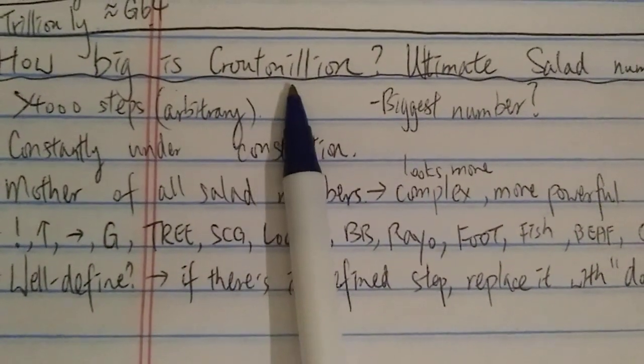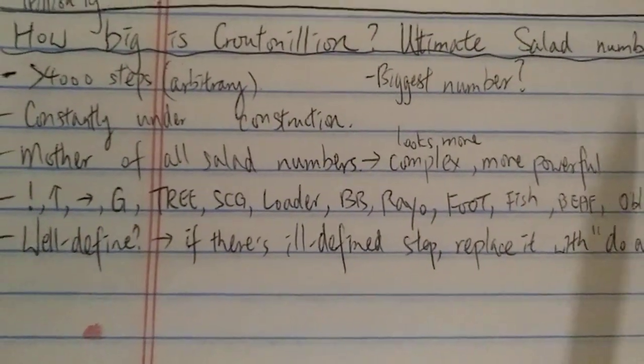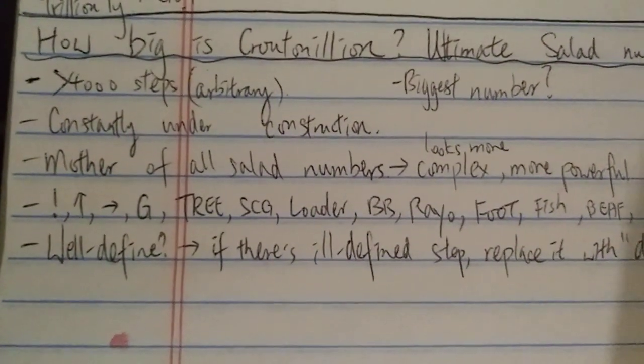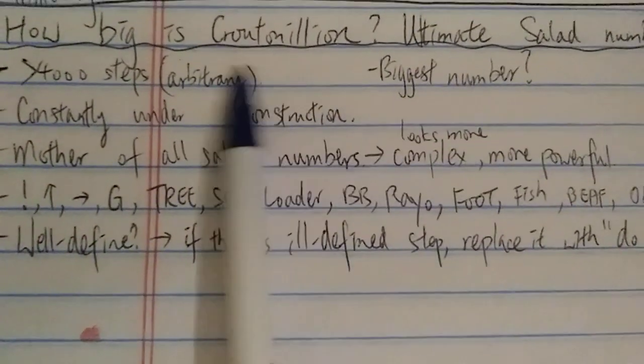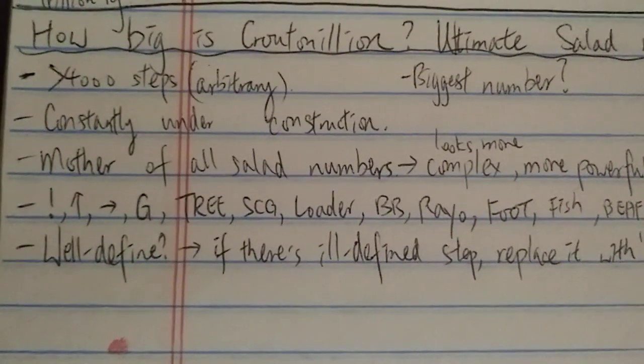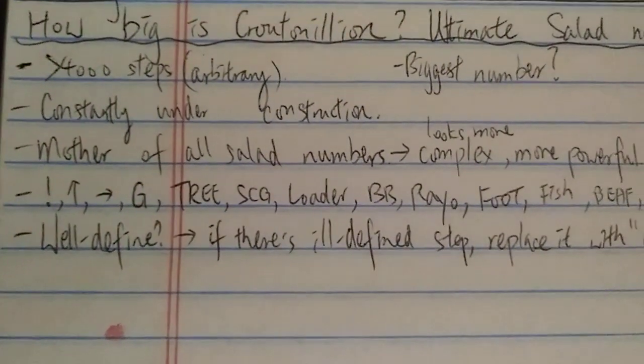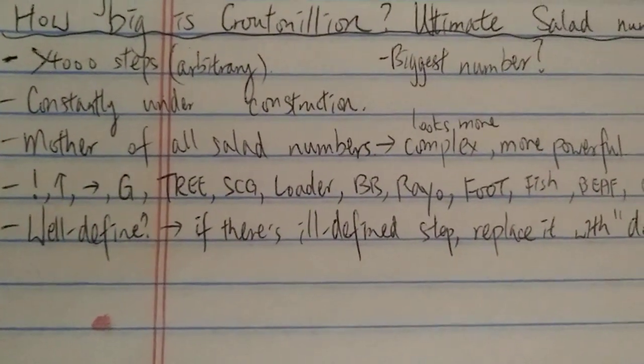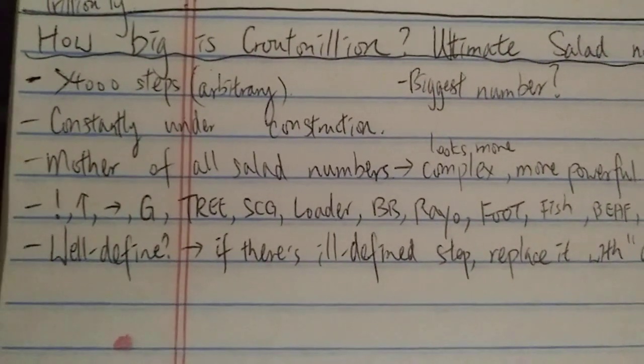So anyway, this is the Quotunlanian, not sure how to pronounce that, it's the ultimate salad number. People keep trying to make the biggest number, but right now, after you watch this video you should check it out. It's a pretty big number, it's the mother of salad numbers, way bigger than the number that you comment in the comment section. So anyway, thanks for watching and have a nice day.